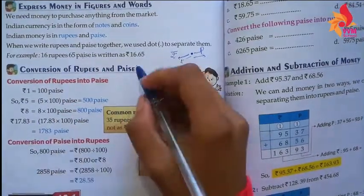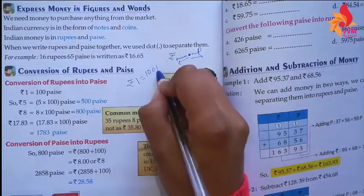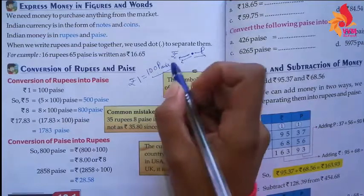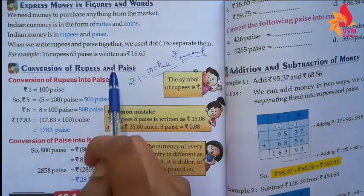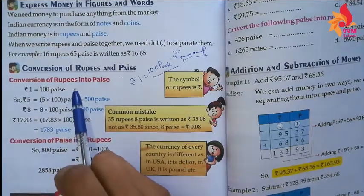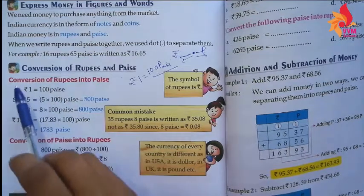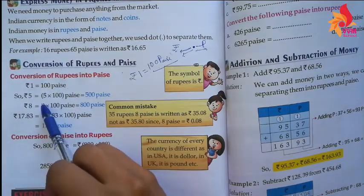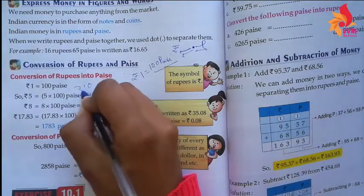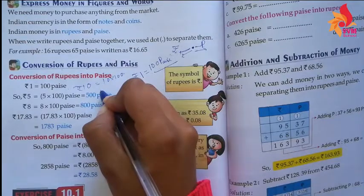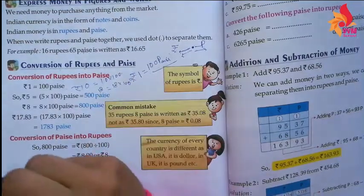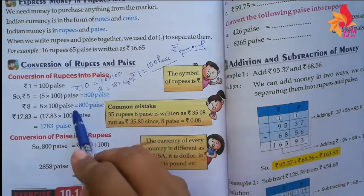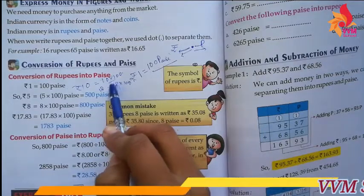The next very important thing: 1 Rupee equals 100 Paise. So 5 Rupees equals 5 into 100, which is 500 Paise. 10 Rupees equals 10 into 100, which is 1000 Paise. 18 Rupees equals 18 into 100, which is 1800 Paise.